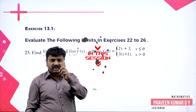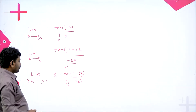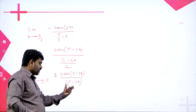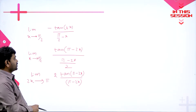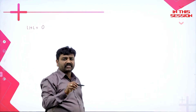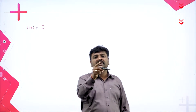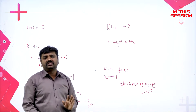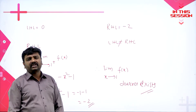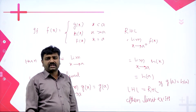Until now we have done problems where f(x) has one value, but here f(x) has two values. When the left-handed limit and right-handed limit are different, the limit does not exist. So whenever a function has more than one value, we should find LHL and RHL.